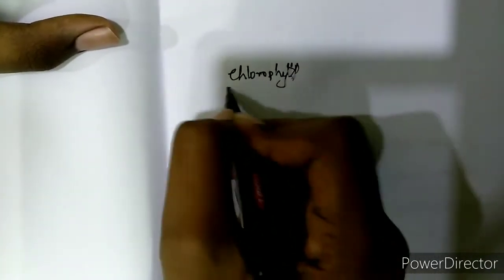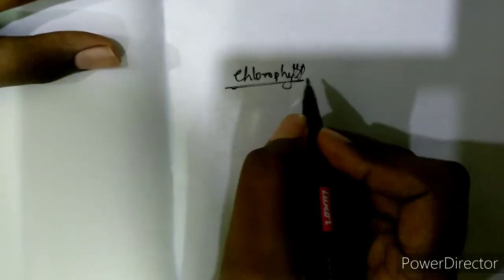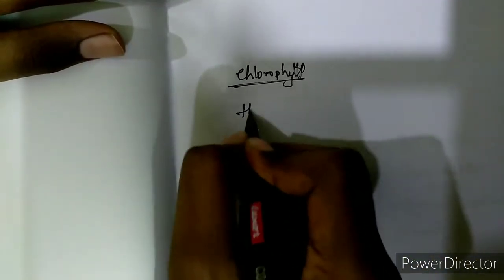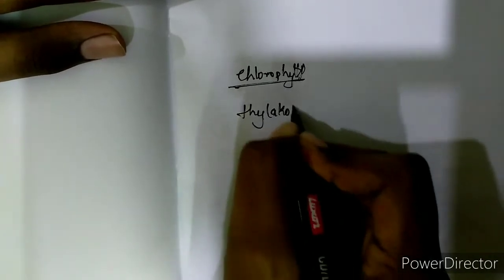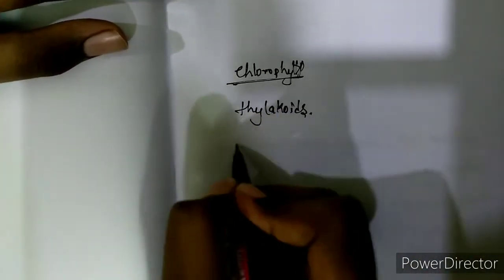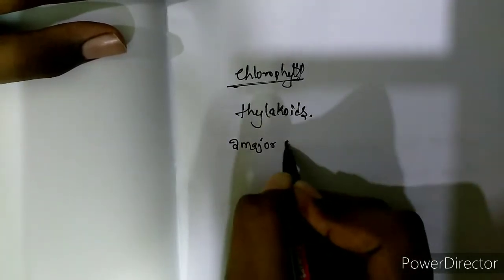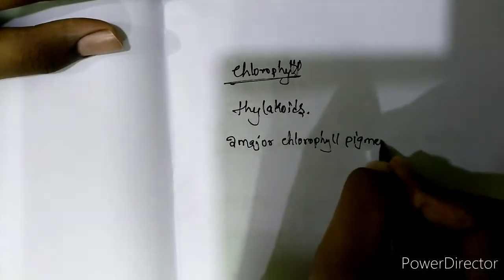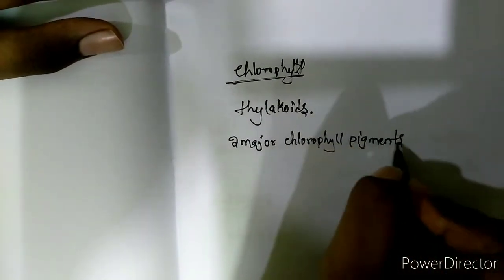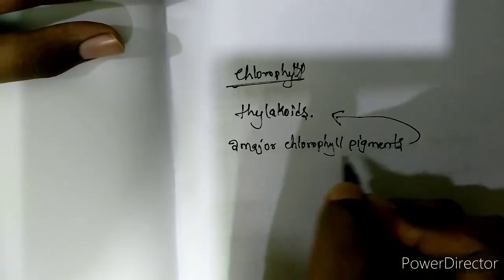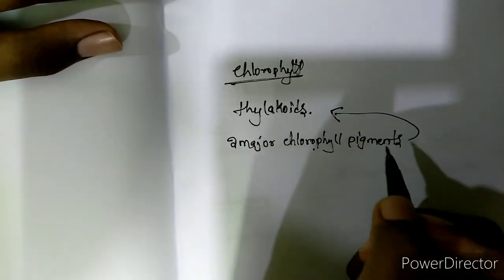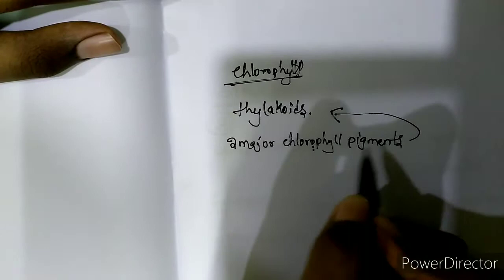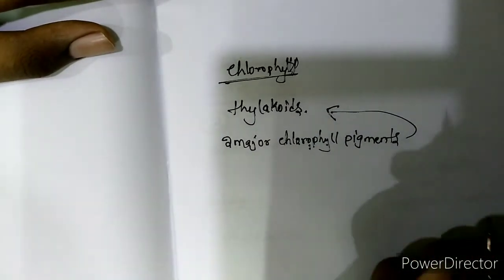Many students confuse between chlorophyll and chloroplast. Chlorophyll is present inside the chloroplast. There are thylakoid membranes in chloroplast, and two major chlorophyll pigments are attached to the thylakoids. So chlorophyll is present inside the chloroplast, attached to the thylakoids.